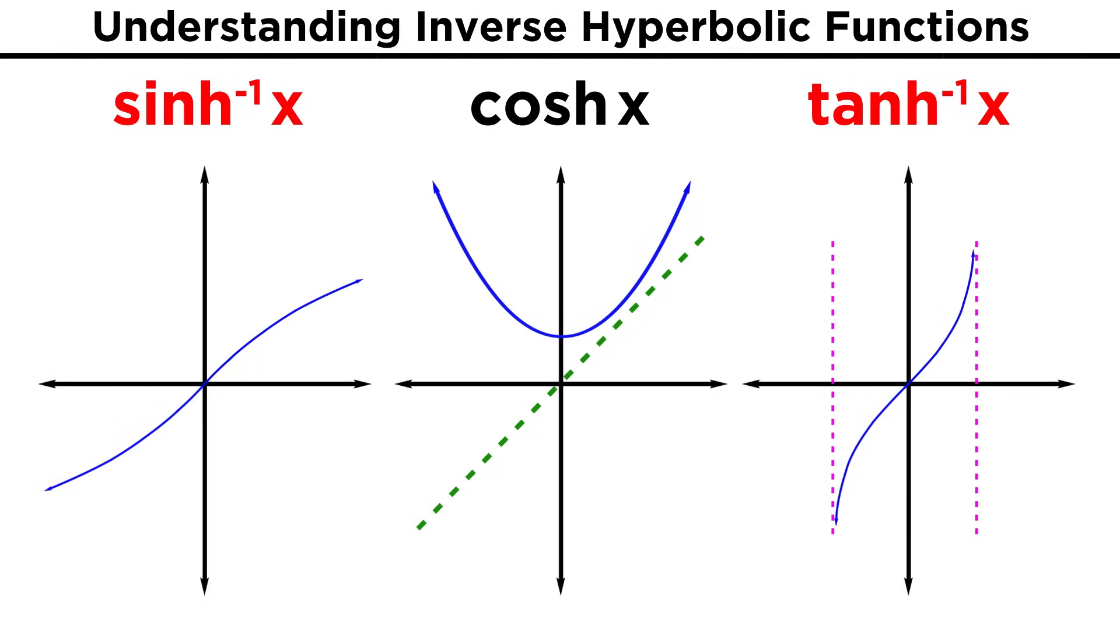Hyperbolic sine and tangent pass the horizontal line test, meaning that their inverses pass the vertical line test and qualify as functions. For hyperbolic cosine, the horizontal line test will fail, so we have to restrict the domain to greater than or equal to zero, and from that we can get the inverse function.